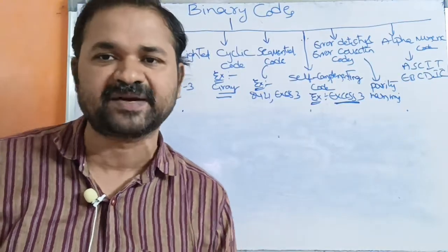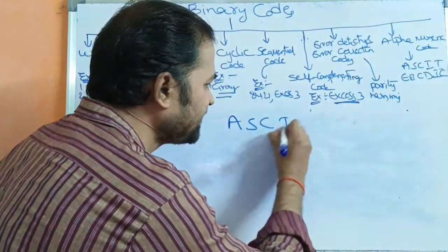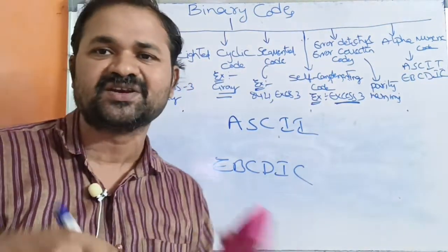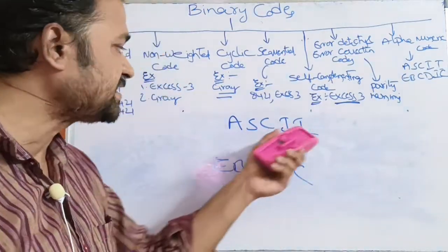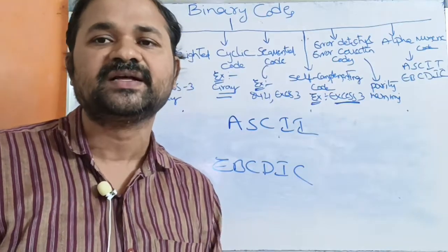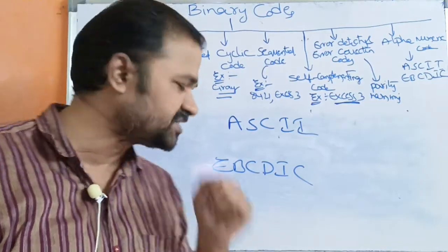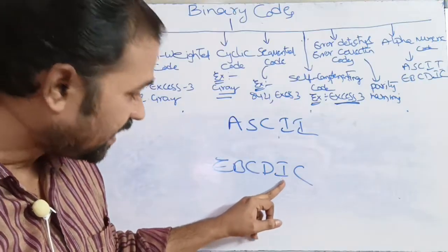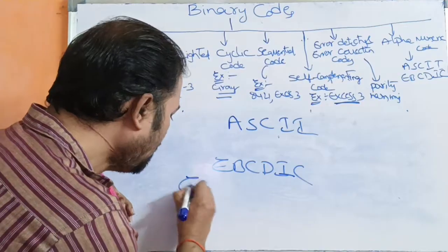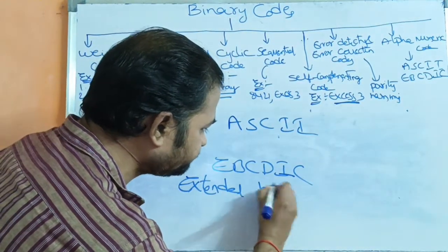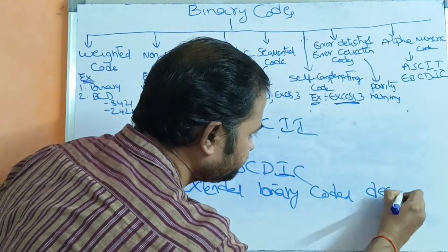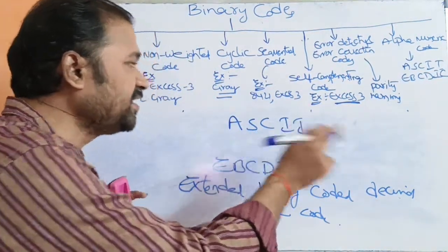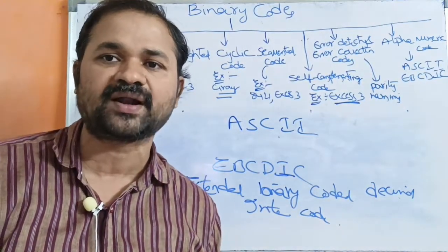Now let us see about the last one, that is alphanumeric code. Alphanumeric code means we can represent both alphabets as well as numbers. We have two types of alphanumeric code: ASCII as well as EBCDIC. By using these notations we can represent alphabets as well as numbers. ASCII stands for American Standard Code for Information Interchange. EBCDIC stands for Extended Binary Coded Decimal Interchange Code. So this is about the classification or types of binary codes.